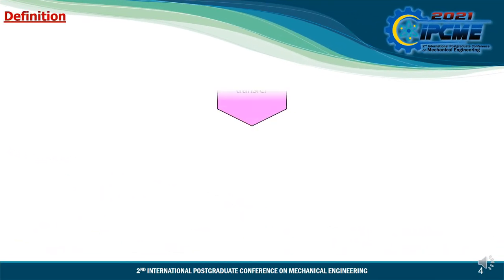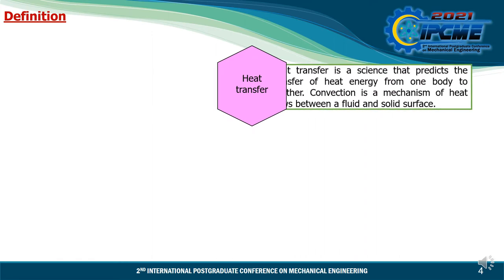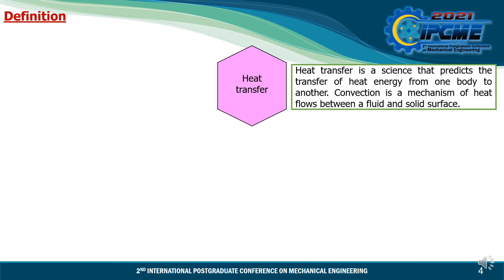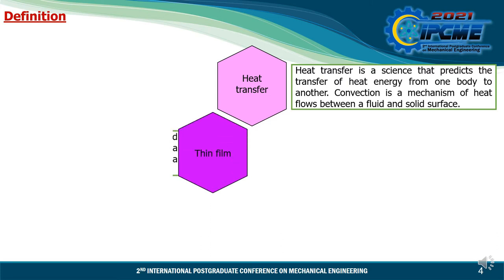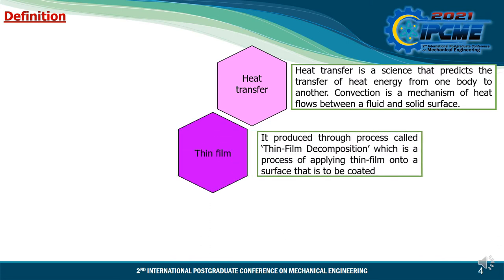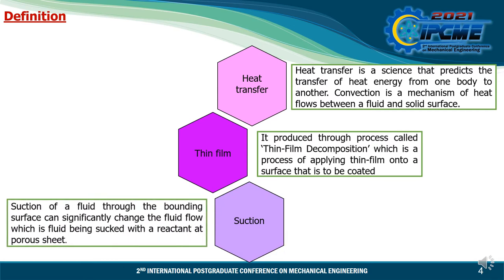Moving to the definitions: firstly, we have heat transfer, which is a science that predicts the transfer of heat energy from one body to another. It occurs through three mechanisms: convection, radiation, and conduction. In this study, we focus on convection, which is a mechanism of heat flow between a fluid and a solid surface. The next definition is thin film — heat is produced through a process called thin film deposition, which is applying a thin film onto a surface to be coated. The next one is suction: suction of fluid through a bounding surface can significantly change the fluid flow over a stretching sheet.